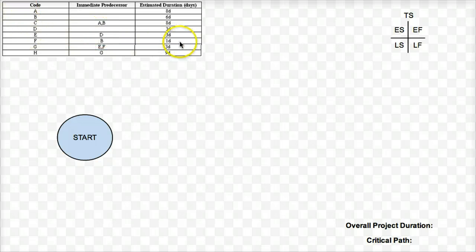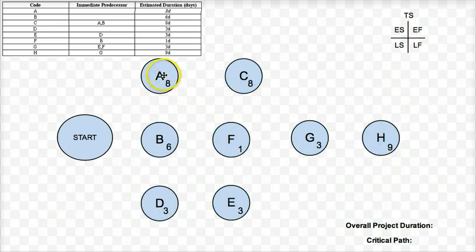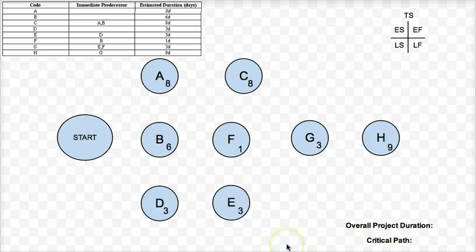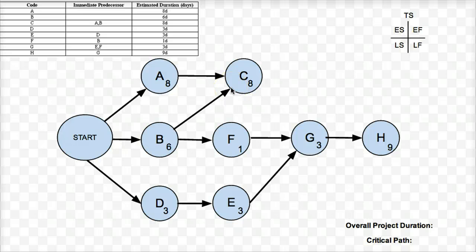Looking at the WBS up here in the top left-hand corner, I can see all the different activities with all the different predecessors and the estimated durations. I'm going to put on the different activities, with one different circle for each activity, and I'm putting in the estimated duration as a subscript on each activity. I've also put in all the different precedences with arrows, trying to make sure that none of the arrows cross each other, but sometimes that's not possible.